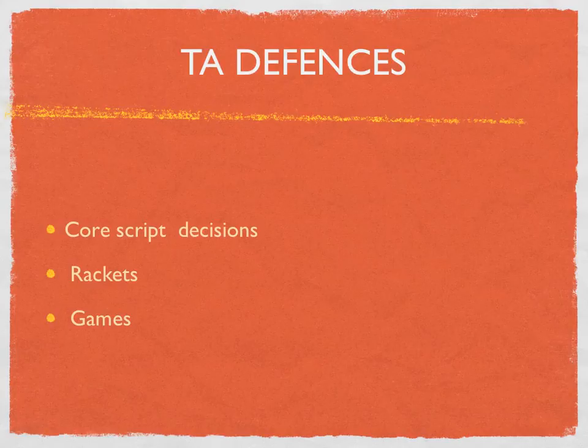Other TA defences — the core script decisions we must get to — include the rackets and, of course, the games. All of these are defending against the vulnerable self.